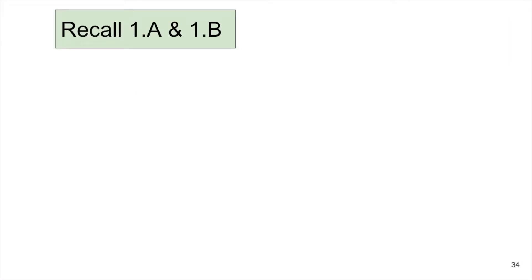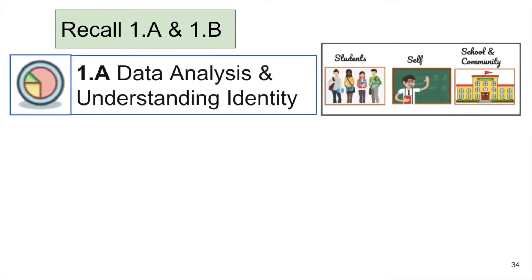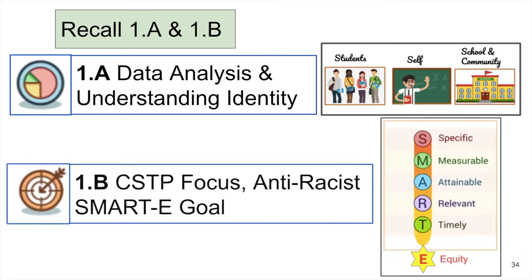In 1a, the teacher collected data and developed understanding around identity, including a CSTP co-assessment, and used this information as a jumping-off point into 1b to create a CSTP-focused SMART-E goal. The SMART-E goal also incorporates aspects of anti-racist practices.